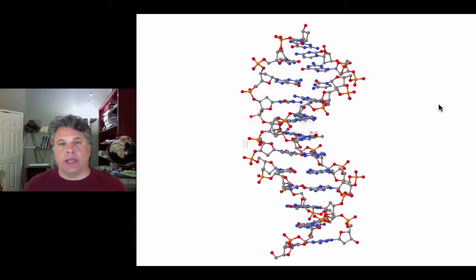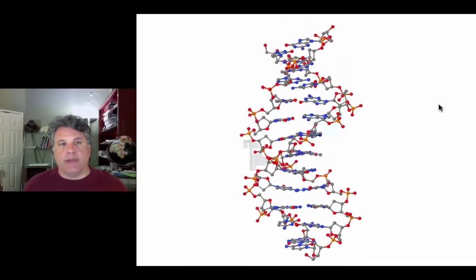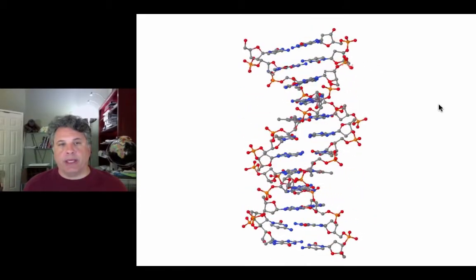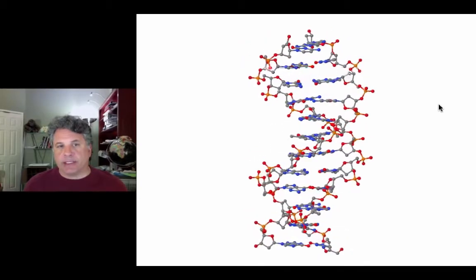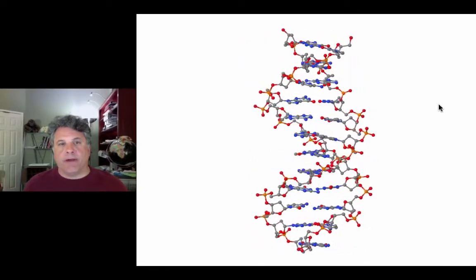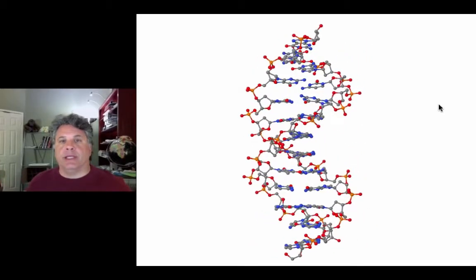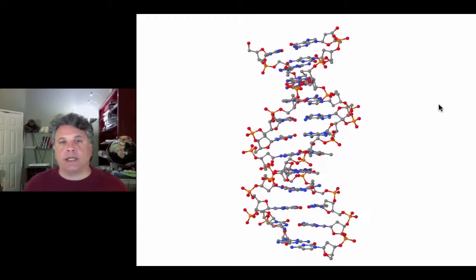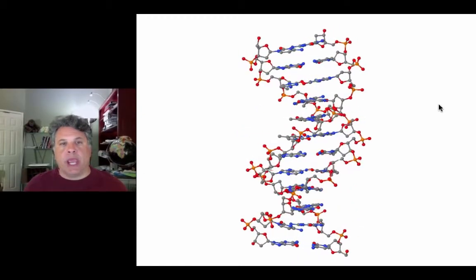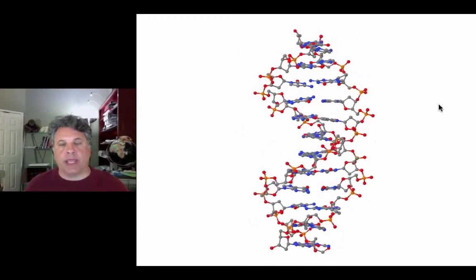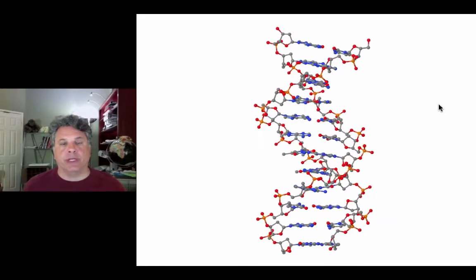The DNA did carry the information that genes carry, and upon the acceptance of those discoveries, a race was on to discover the structure of the DNA molecule. As you know, Watson and Crick won that race and solved the structure, came up with a plausible model for the structure of DNA.